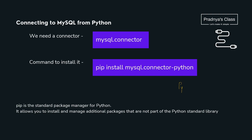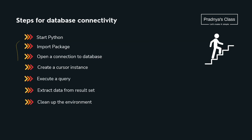We studied Python and now we are well familiar with MySQL commands too. Through a Python program we will work with MySQL. For that we need the mysql.connector module, which we can install with the pip install command. Here are the steps for the connectivity — we will be discussing them one by one.